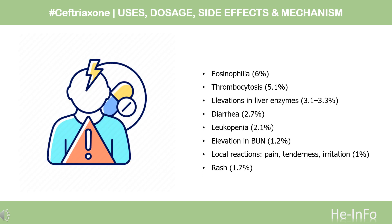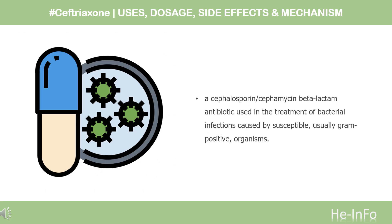Side Effects. Although generally well-tolerated, the most common adverse reactions associated with ceftriaxone are changes in white blood cell counts, local reactions at the site of administration, rash, and diarrhea. Incidence of adverse effects greater than 1%: Eosinophilia 6%, thrombocytosis 5.1%, elevations in liver enzymes 3.1–3.3%, diarrhea 2.7%, leukopenia 2.1%, elevation in BUN 1.2%, local reactions (pain, tenderness, irritation) 1%, and rash 1.7%.